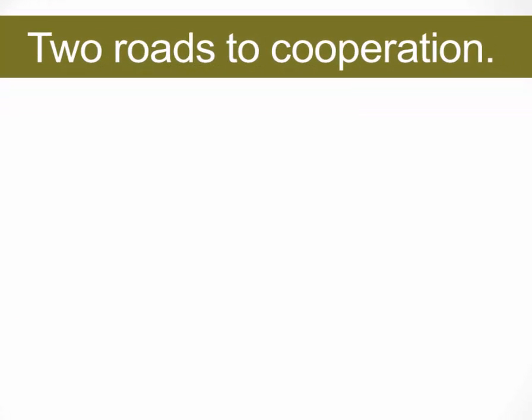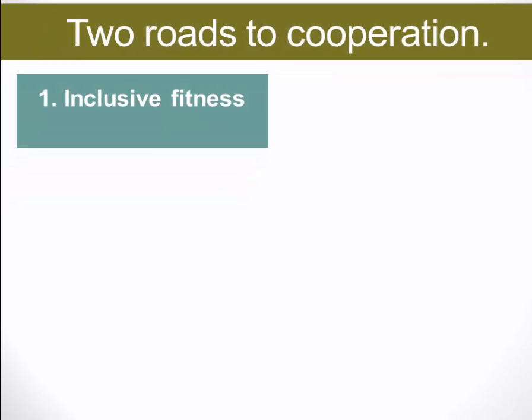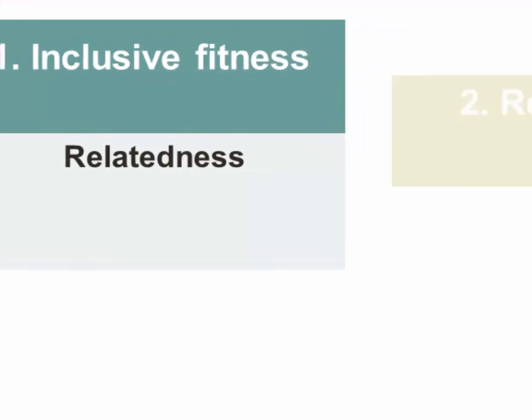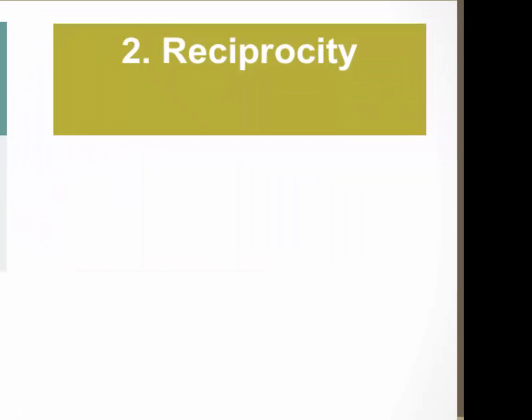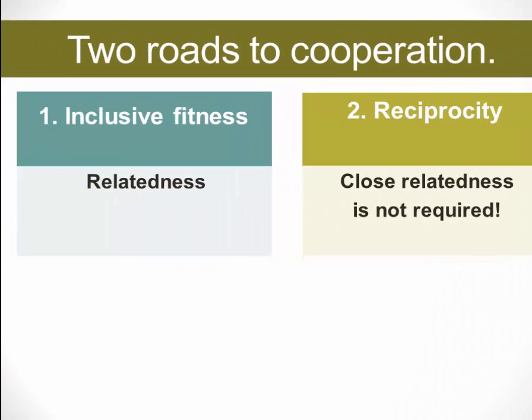As we've discussed, we've identified two roads to cooperation so far. One is inclusive fitness, which turns on close genetic relatedness. We've also discussed reciprocity, and what's important about reciprocity is that it does not turn on close genetic relatedness. So it gives us a way to model the evolution of cooperation without relying upon close genetic relatedness.